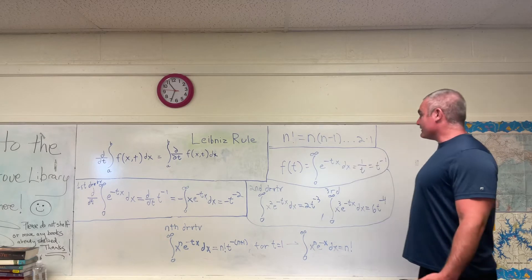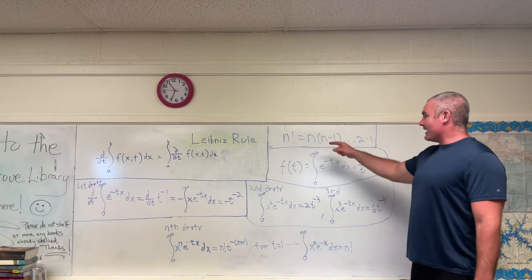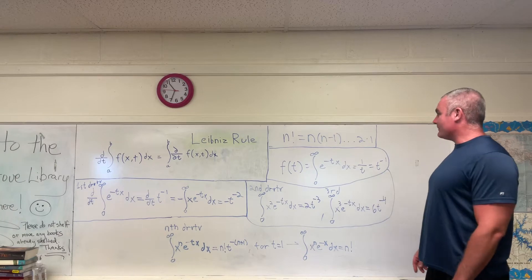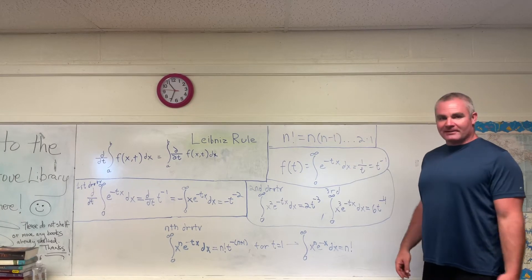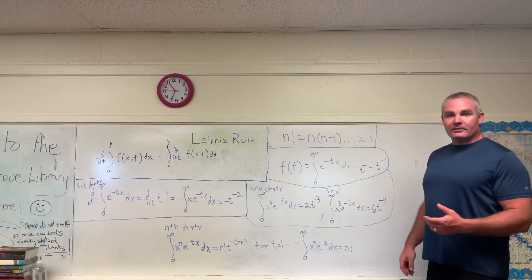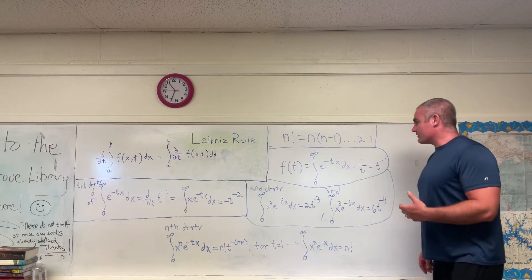n factorial is equal to n times n minus 1 times n minus 2, all the way down to 2 times 1. For instance, 3 factorial is 3 times 2 times 1, or 6.